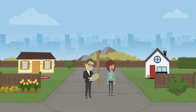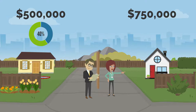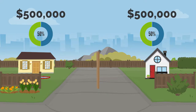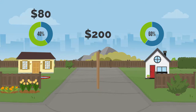Now, let's assume it's revaluation time, and property one's land value stays the same, but the land value of property two increases to $750,000. Property one's value is 40% of the total value of the district, and the value of property two is 60%. Property one's portion of the general rate drops, while property two has an increase. But council still needs $200 to run the district under the general rate — the amount needed hasn't changed. It's just split across the two properties proportionate to their land value. Property one now pays $80, or 40% of the total district value, and property two pays $120, or 60% of the total value.